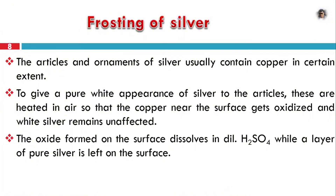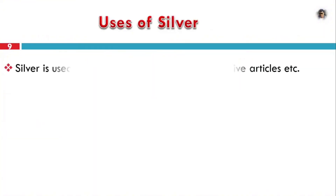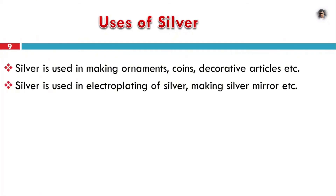In this case, we use dilute H2SO4 to dissolve the copper oxide from the surface of the silver, restoring the white frosted appearance. This process is known as frosting of silver, giving it a white appearance. Silver is used to make ornaments, coins, decorative particles, and for electroplating. It is also used for making silver mirrors.